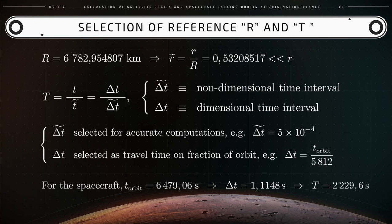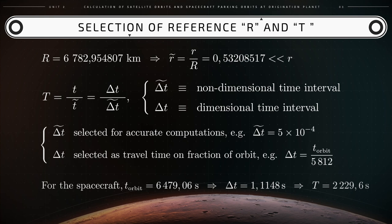So let's set delta t equal to 1.1148 seconds, as was the case for the flight of a spacecraft around Earth. As a result, the reference time capital T, which equals the ratio of delta t over delta t̃, will equal 2,229.6 seconds, or 2.91 times smaller than the time of a complete orbit.